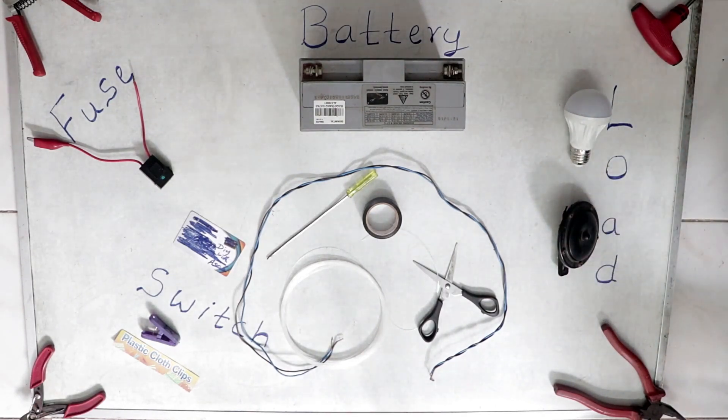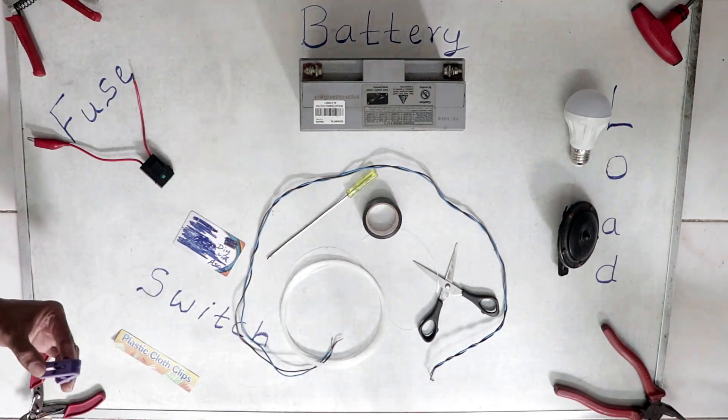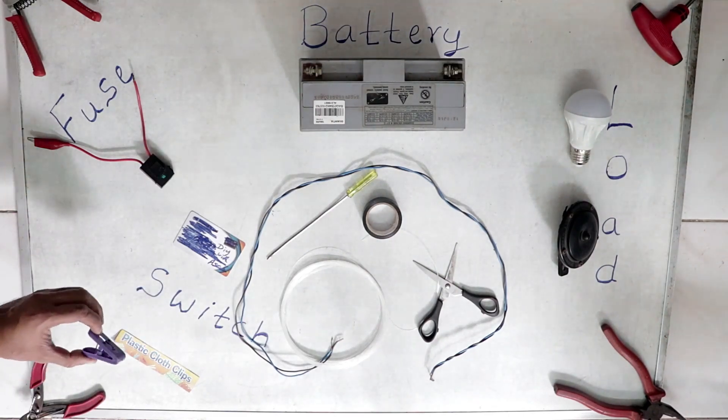You'll be needing a 12-volt bulb to light up or a horn to make some noise. You can use either one of them as your load. Depending on the load, I have used both 12-volt items, so I'll be using a 12-volt battery. If I'm using something less than 6 volts, I won't be using this fuse. The most important thing is this plastic cloth clip—this is going to act as our switch.